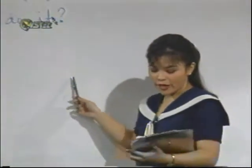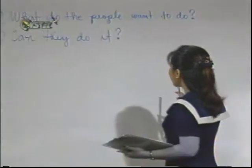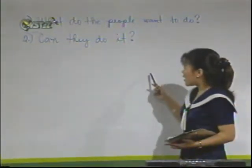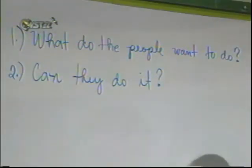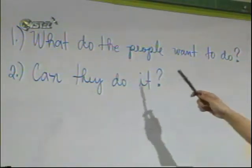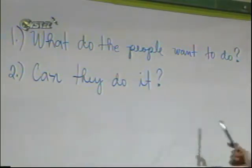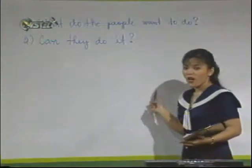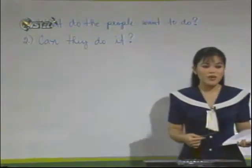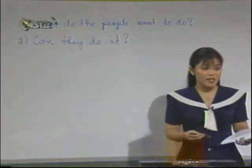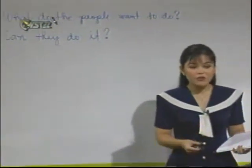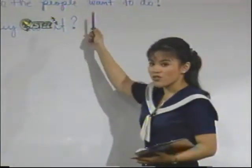Let's watch this one where a conversation is used as the stimulus. Class, there are two questions on the board. What I'd like you to do is to read them silently and try to remember them. The two questions are: what do the people want to do, and can they do it? I'm going to read you a dialogue between two persons, and then on your paper, write down the answers to these two questions on the board.